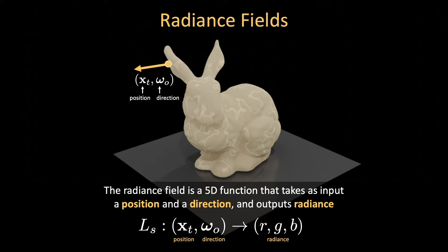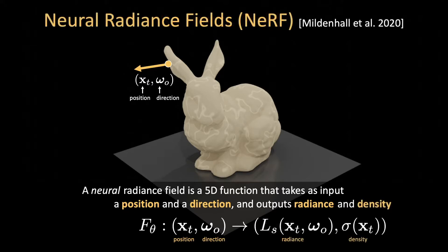A neural radiance field, or NERF, uses a neural network to perform this mapping. In addition to radiance, this network also outputs optical density, the measure of attenuation through a point in space.